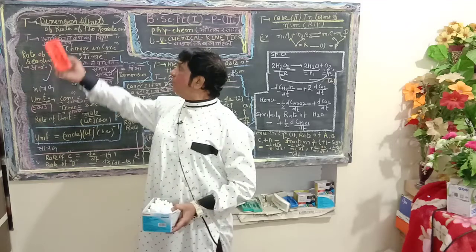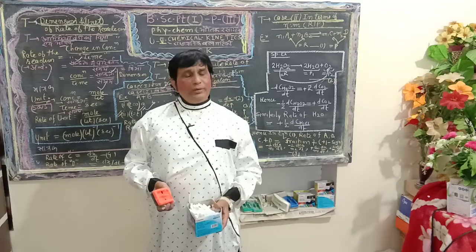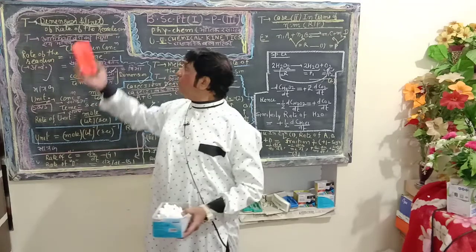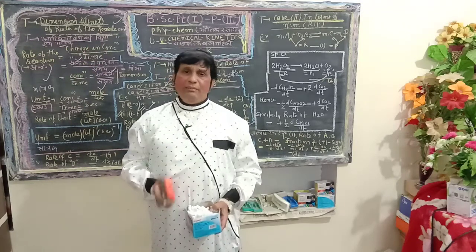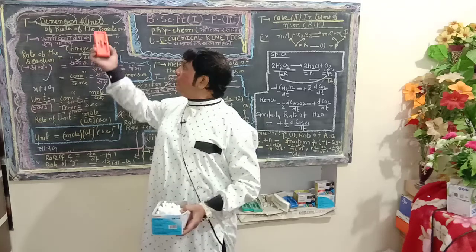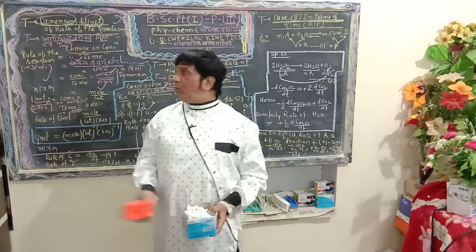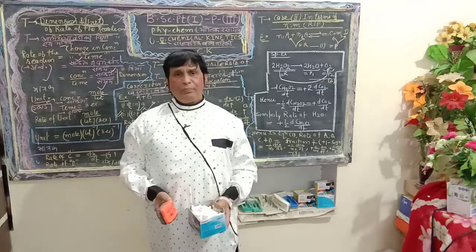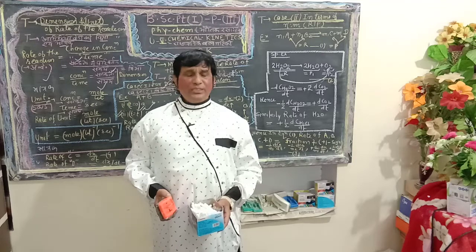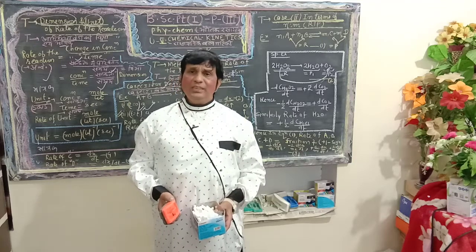When I ask a student about dimension, they respond with the unit. When I ask about the units for rate of reaction, they respond with the dimension. So first of all, I would like to distinguish between dimension and units.